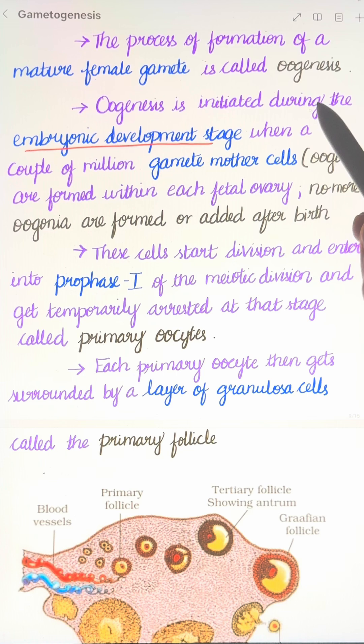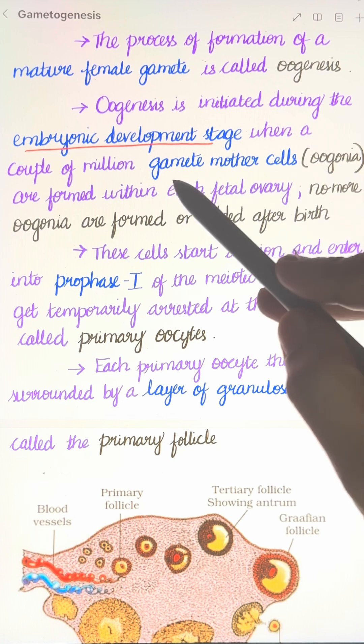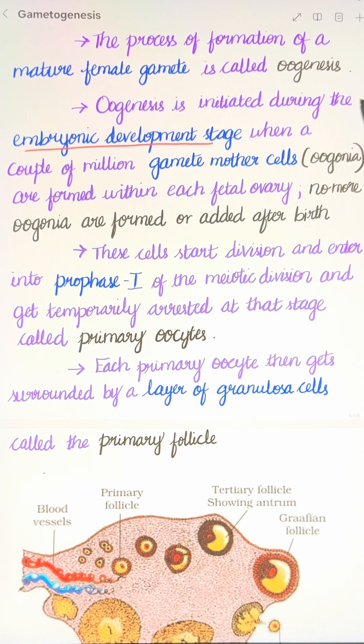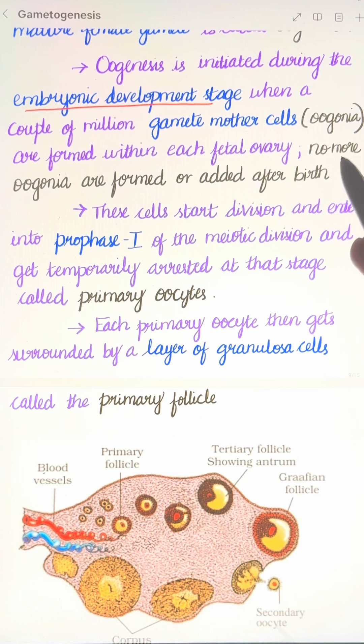During the embryonic development stage, that is the fetal stage, a couple of million gamete mother cells, that is oogonia, are formed within each fetal ovary. Roughly 2 million oogonia form in each fetal ovary, and no more oogonia are formed or added after birth.